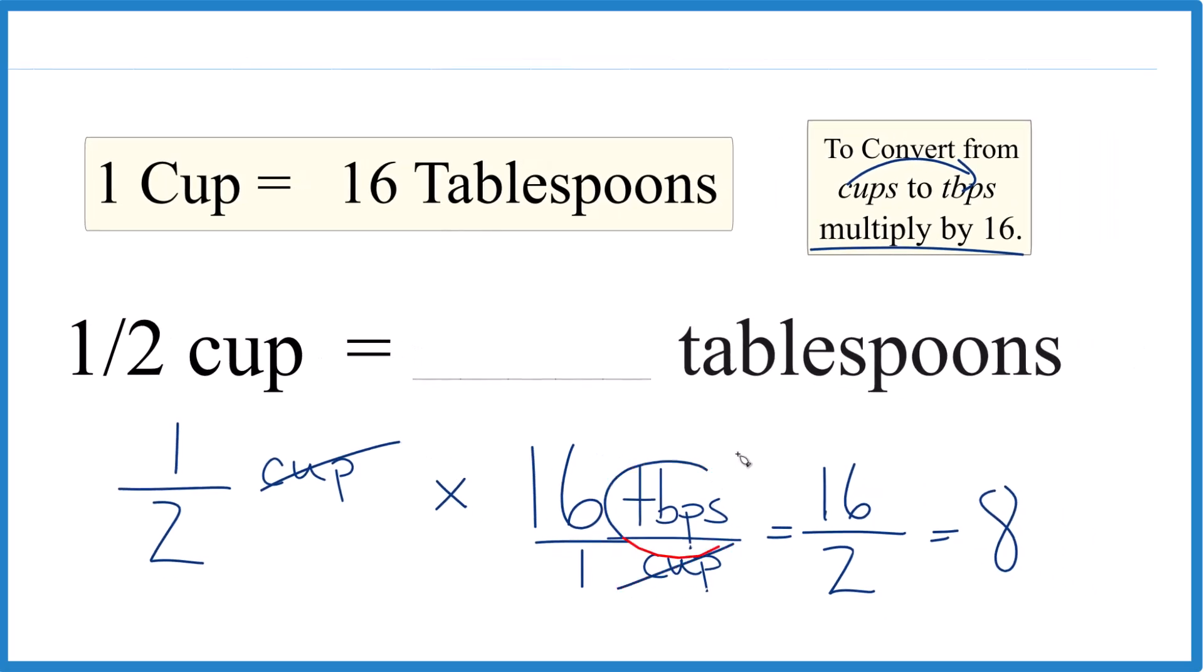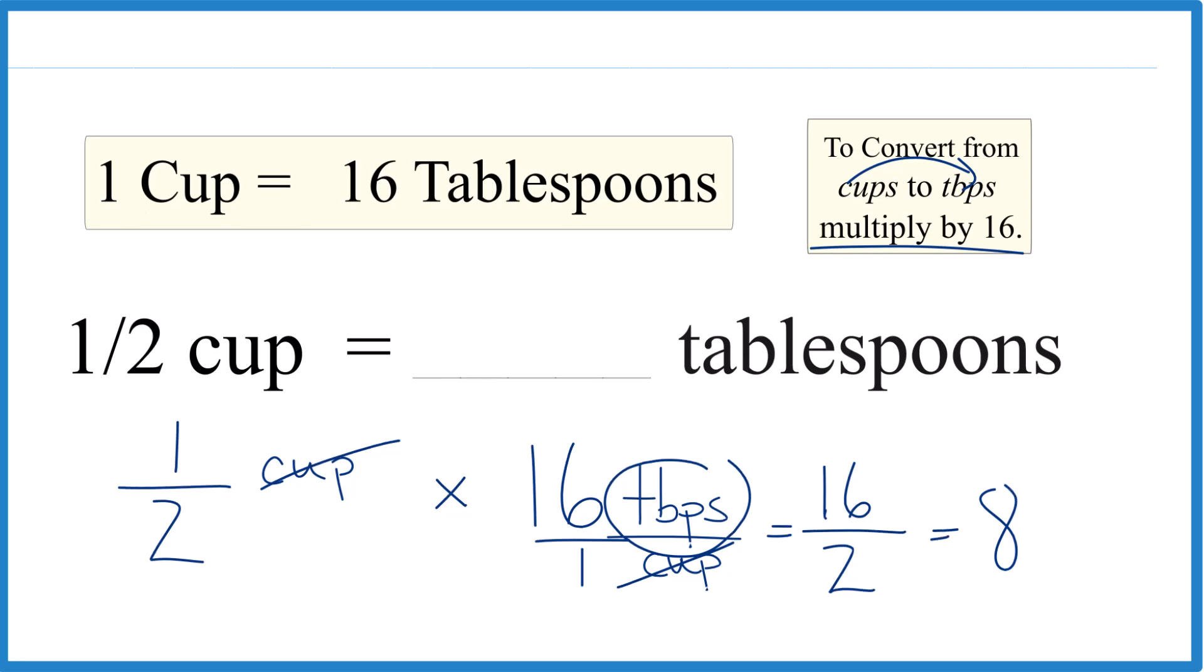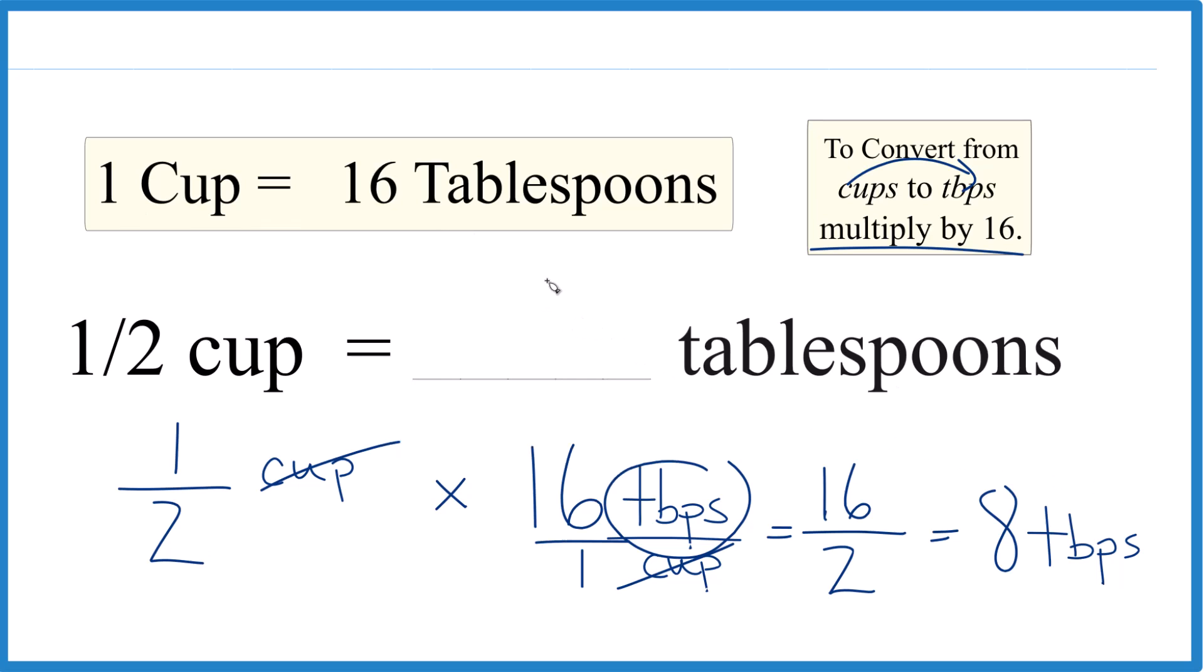Cups cancel out. We get our tablespoons. That's the units, and we're done. So just like we found before, one half cup, that equals eight tablespoons.